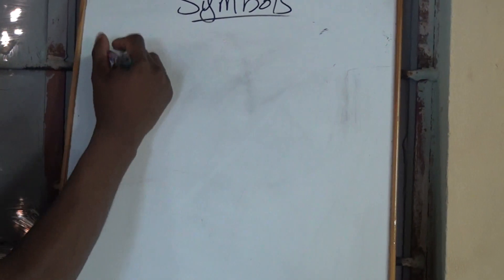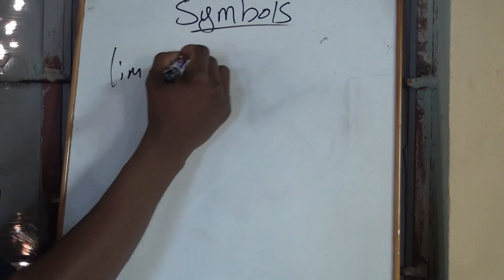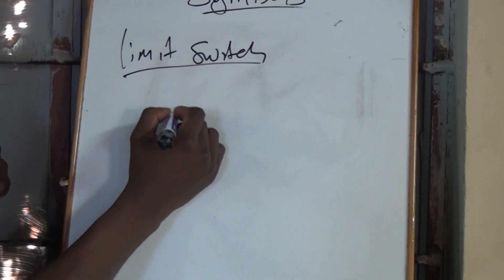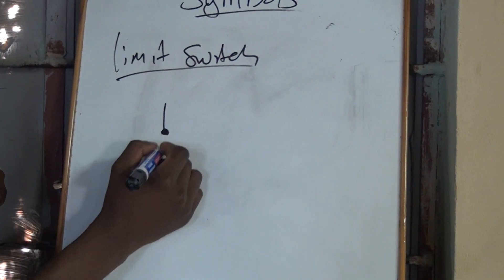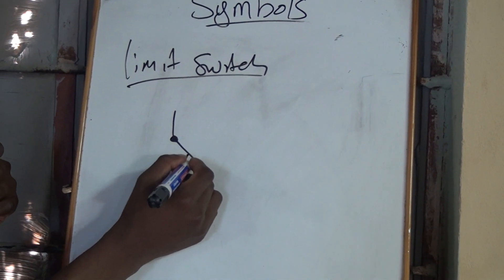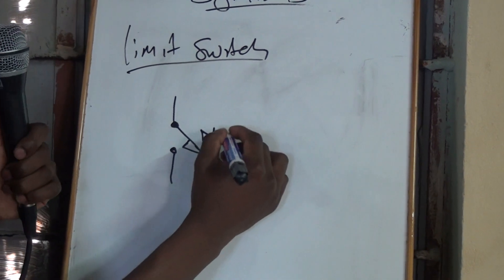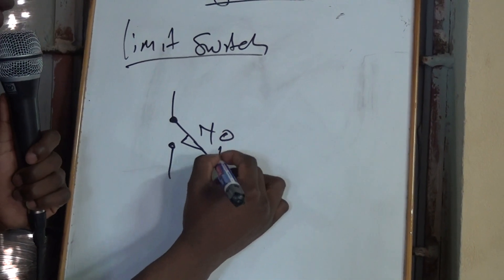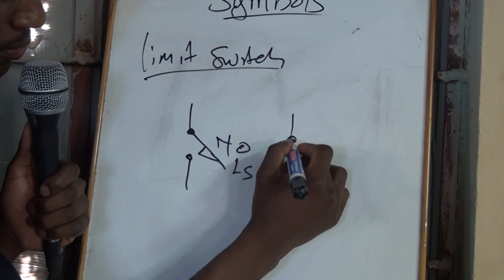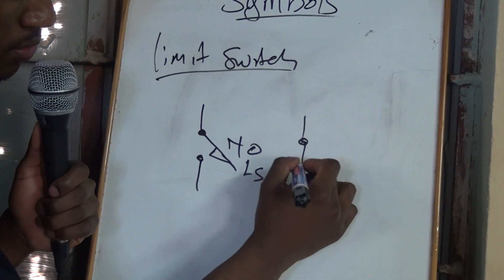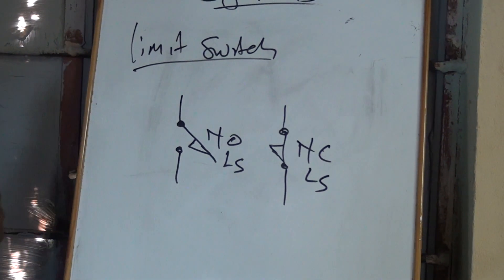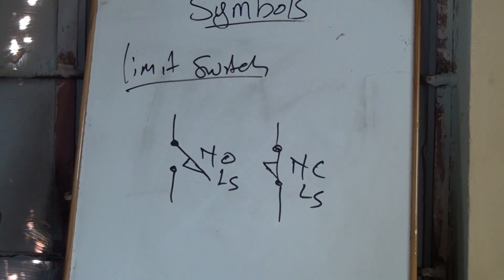Now let's look at the limit switch. The normally open contact of a limit switch is drawn like this — label it LS. Then the normally closed contact of a limit switch is drawn like this. That's it about the limit switch.